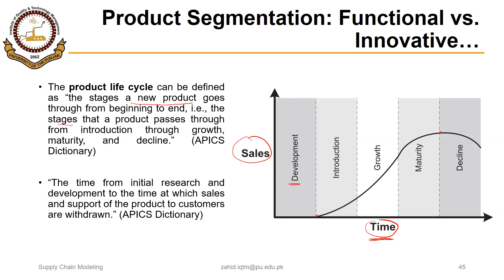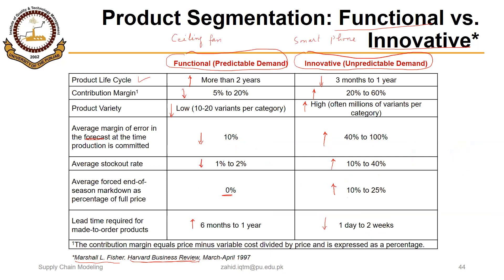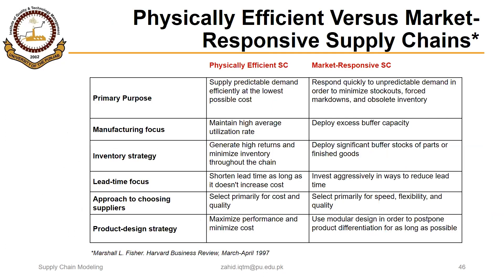This life cycle curve is also very important with respect to marketing and production strategy. There is a different marketing strategy for products in the introduction, growth, maturity, and decline phases. Understanding the life cycle helps classify functional and innovative products and devise the appropriate supply chain. Functional products require a physically efficient supply chain, while innovative products require a market-responsive supply chain.